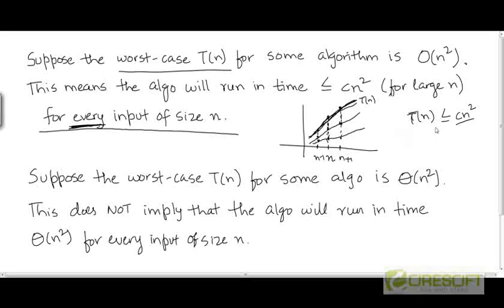This is because t is the worst case running time — it is the running time on the worst case input, that particular input of size n which forces the algorithm to run the longest on any input of that size. So if the worst case running time is O(n²), then every single running time for an input of size n is going to be O(n²). But this doesn't hold for the theta notation.